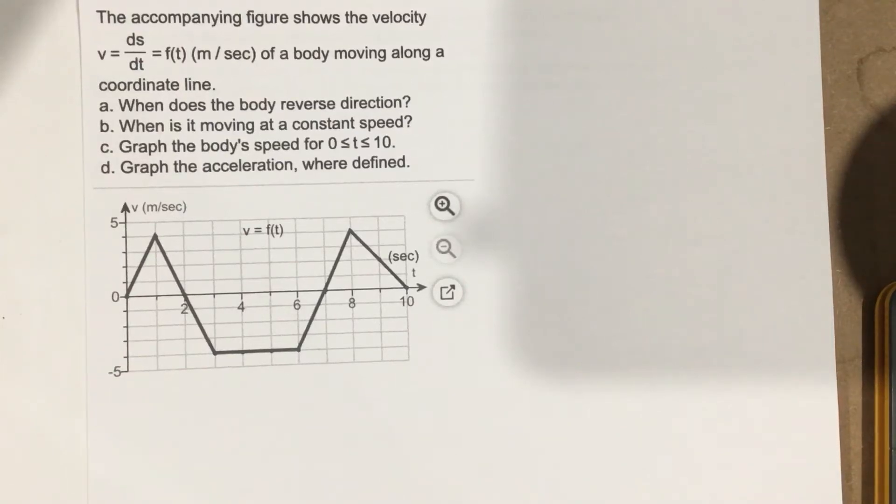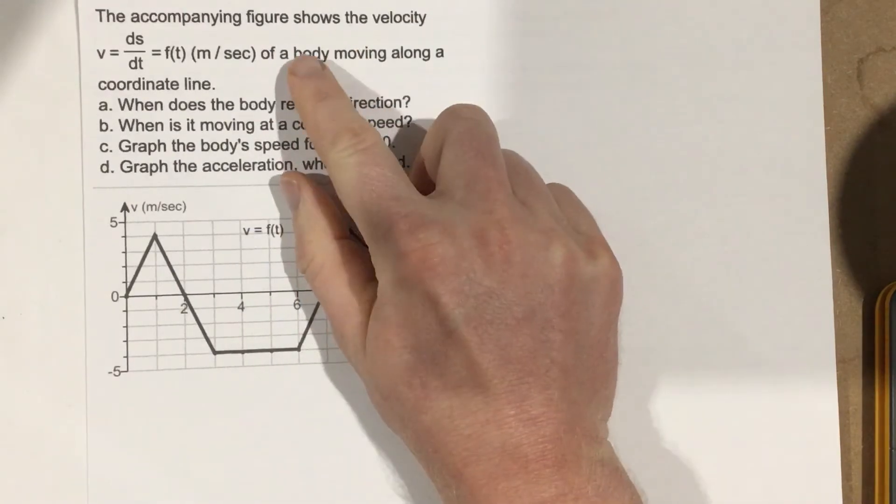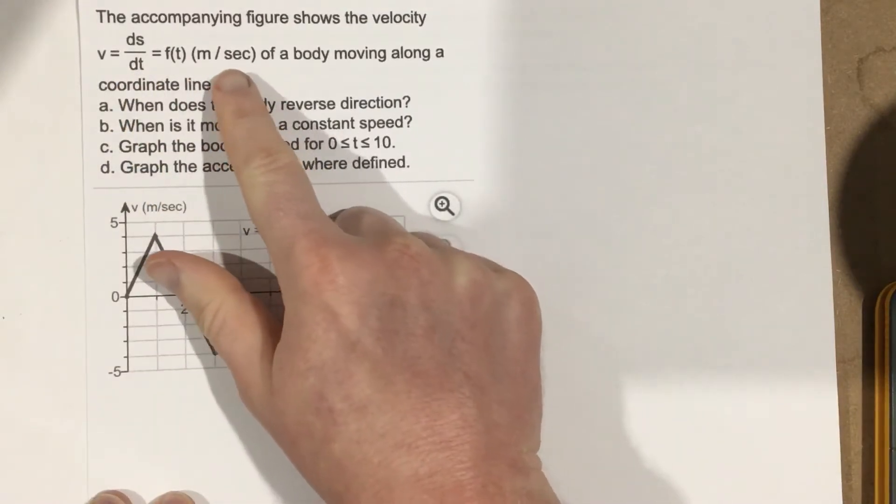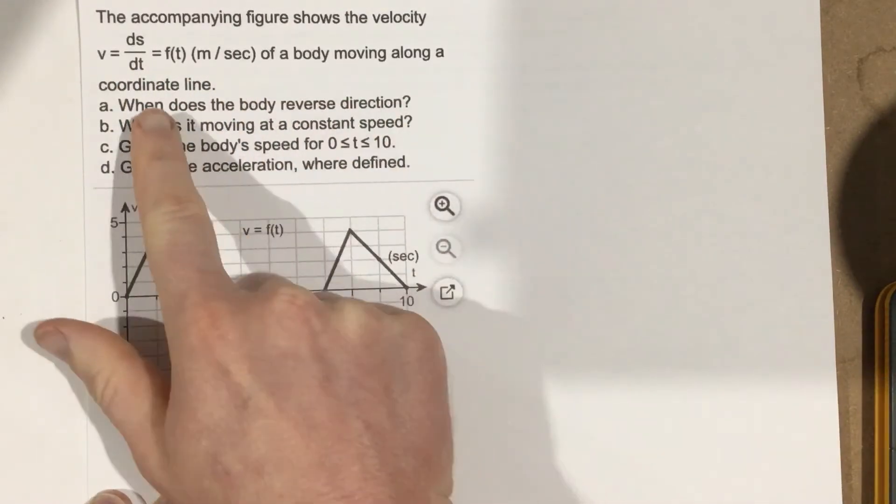This is problem number six from section 3.4. In this problem, the accompanying figure shows the velocity v equals ds/dt in meters per second of a body moving along a coordinate line.